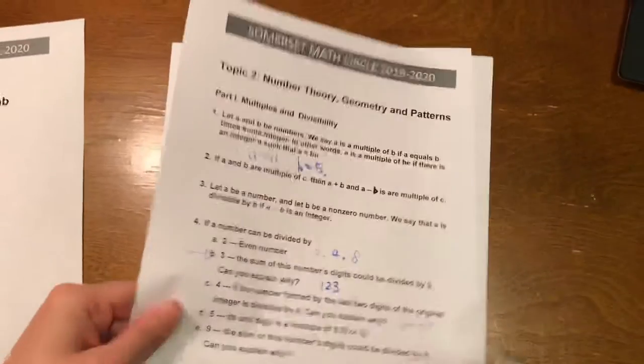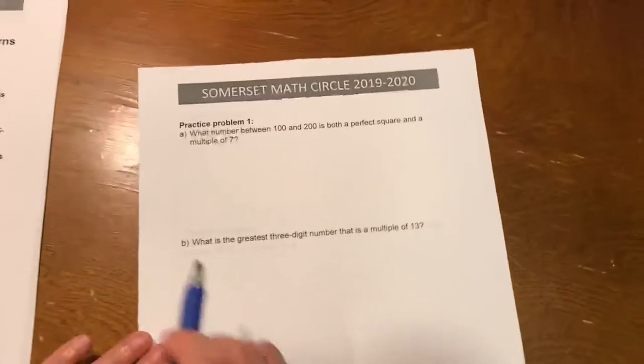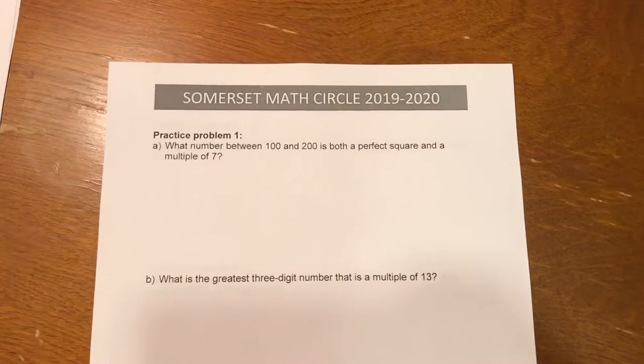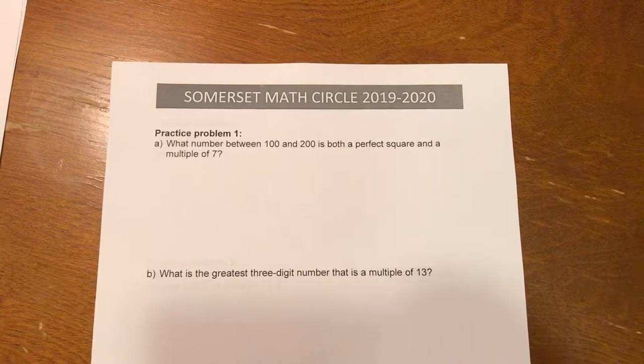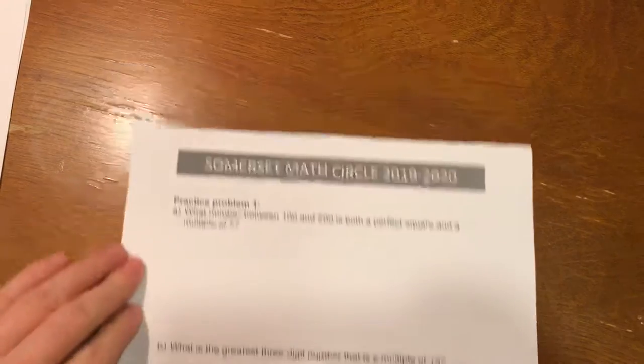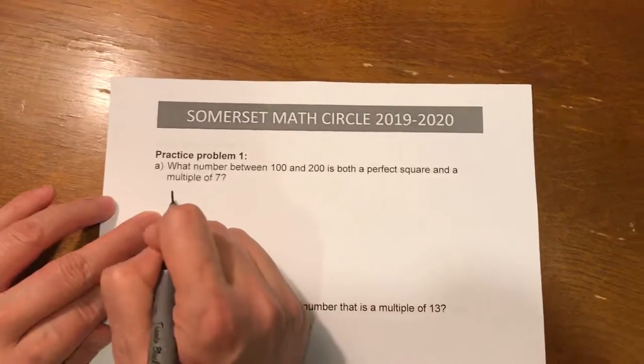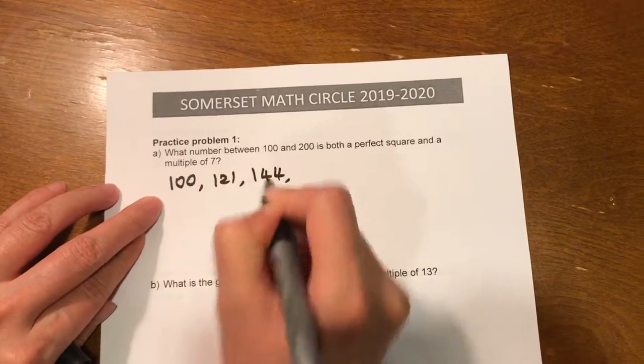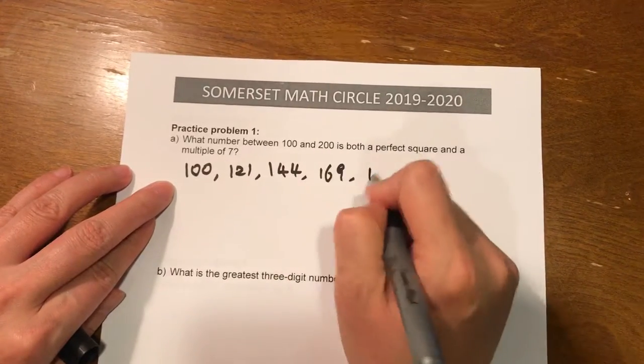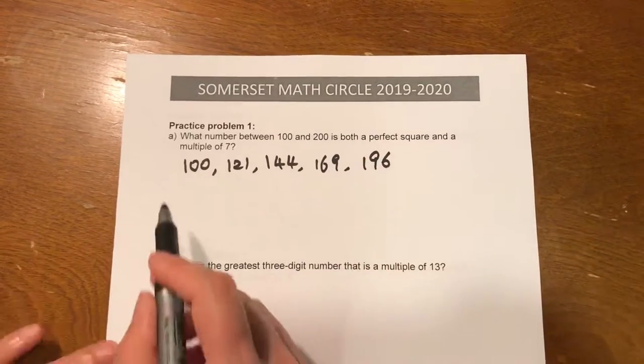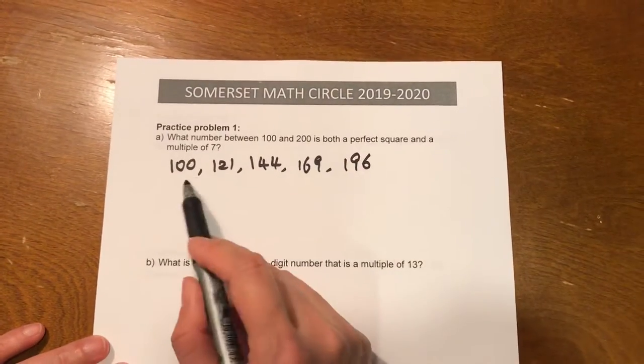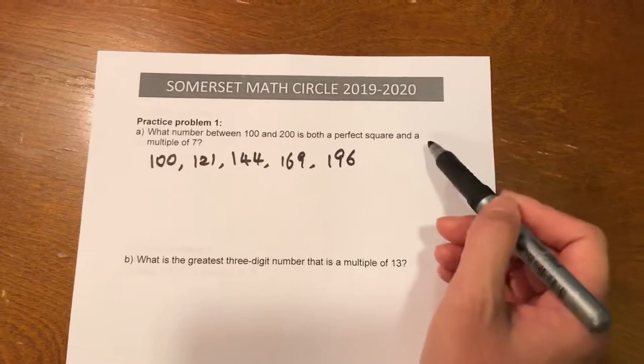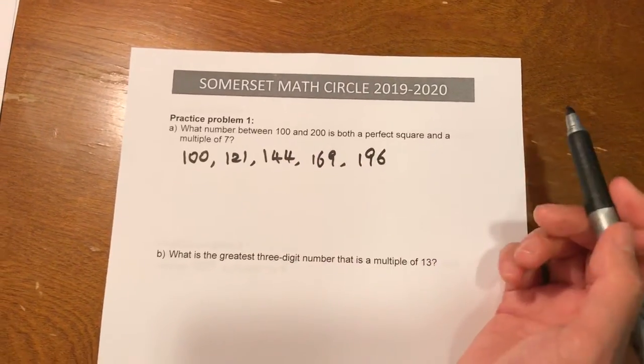Let's look at some practice problems. Practice problem 1A. What number between 100 and 200 is both a perfect square and a multiple of 7? This problem is relatively easy. The students can just list all the perfect square numbers between 100 and 200. So 100 is a perfect square itself, this is 10 squared. Next is 11 squared, 12 squared, 13 squared, and 14 squared. And that's it. So before 200, these 5 are the perfect square numbers. And we can try for each one whether they can be divided by 7. If they can be divided by 7, then that's a multiple of 7, and that would be the answer. So we'll let the students finish this one.